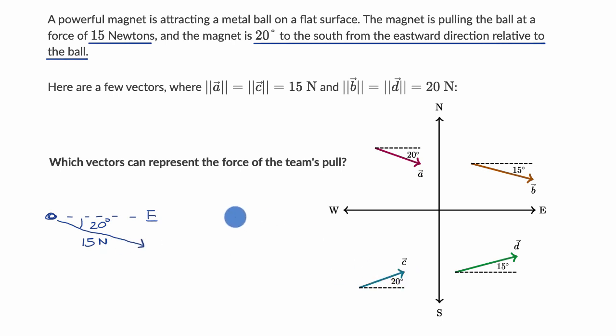When we look at the choices, choice A is interesting. At least the direction looks right. It looks like it's 20 degrees south of due east, and they also tell us that the magnitude of A is 15 newtons. So I am liking A.